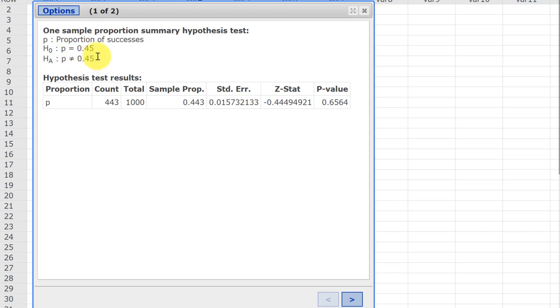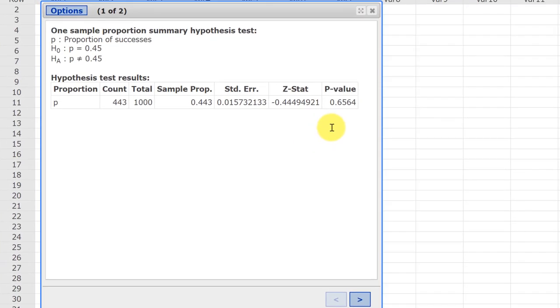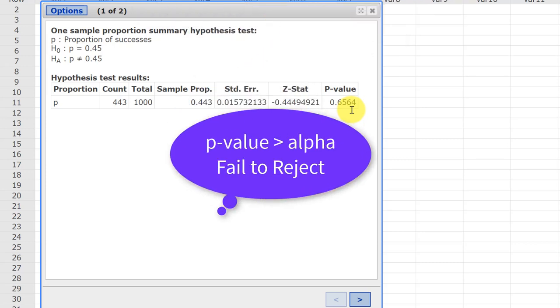Our z standardized test statistic is minus 0.4444 which rounds to two decimal places of minus 0.44, which is the answer they wanted us to give them. Over here StatCrunch gives us a P value and that very large P value, 0.6564, tells us that it is much greater than alpha of 0.08. Therefore we would fail to reject as our decision.